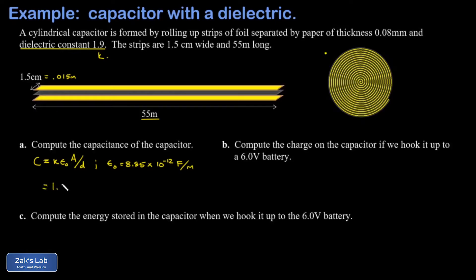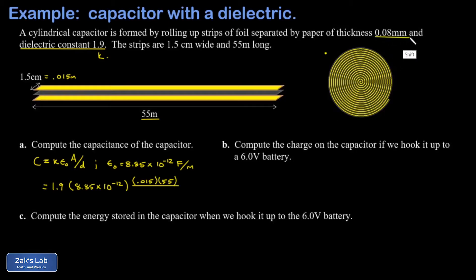All we have to do is plug in 1.9 for kappa and the permittivity of free space. The area is just length times width in the correct units: 0.015 meters multiplied by 55 meters. Then we divide by the separation between the foil strips, which is 0.08 millimeters — the thickness of that paper — shifted three decimal places to get it in meters. When we run the numbers, we get 1.73 times 10 to the negative 7 farads.